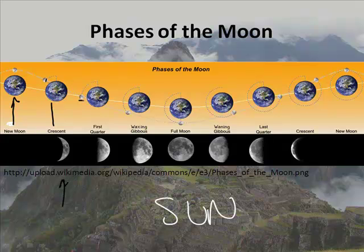And then the first quarter, when the Moon is just to the left of the Earth as our picture is. The waxing gibbous Moon is when it's kind of over here. And a full Moon — hold on, let me check. Okay, I'm good.